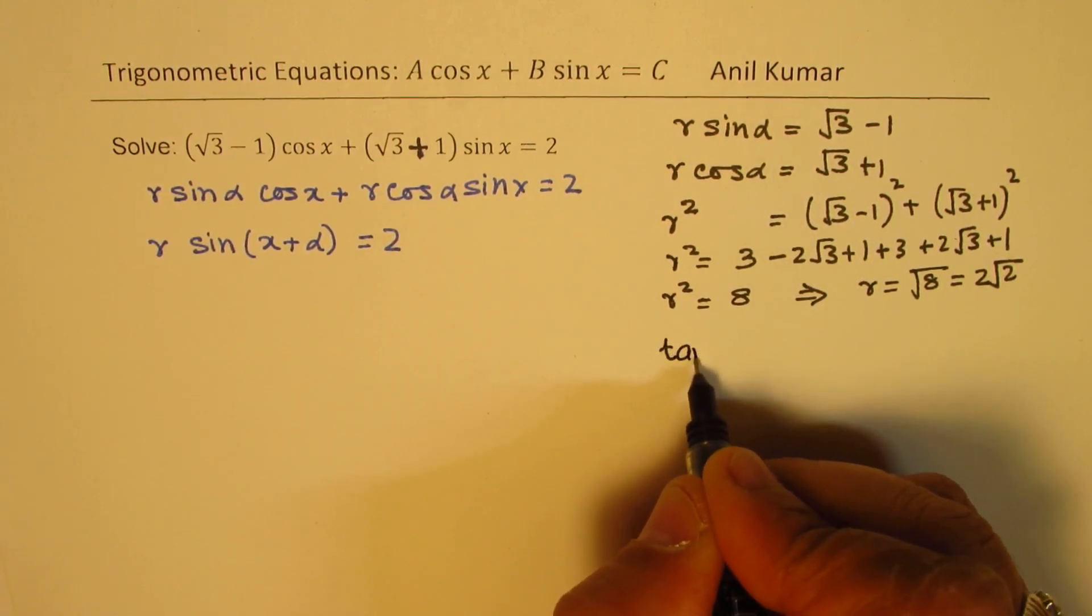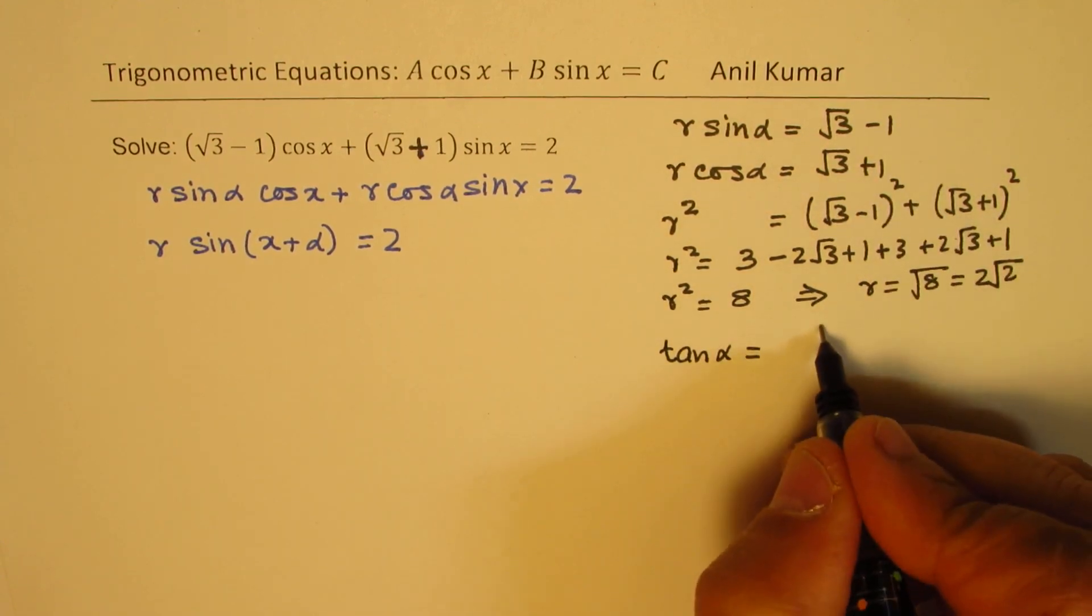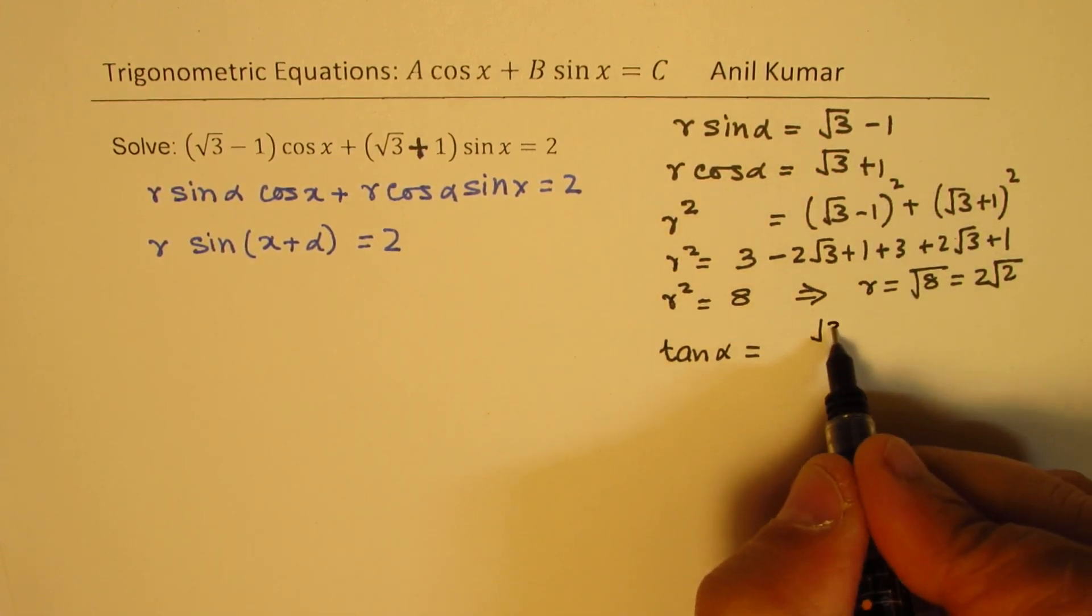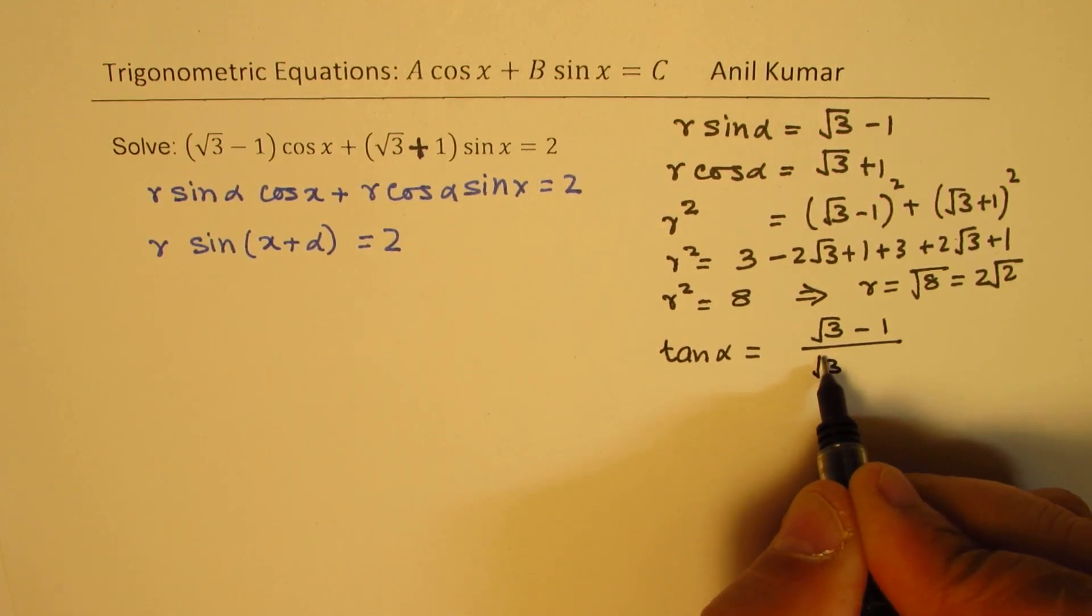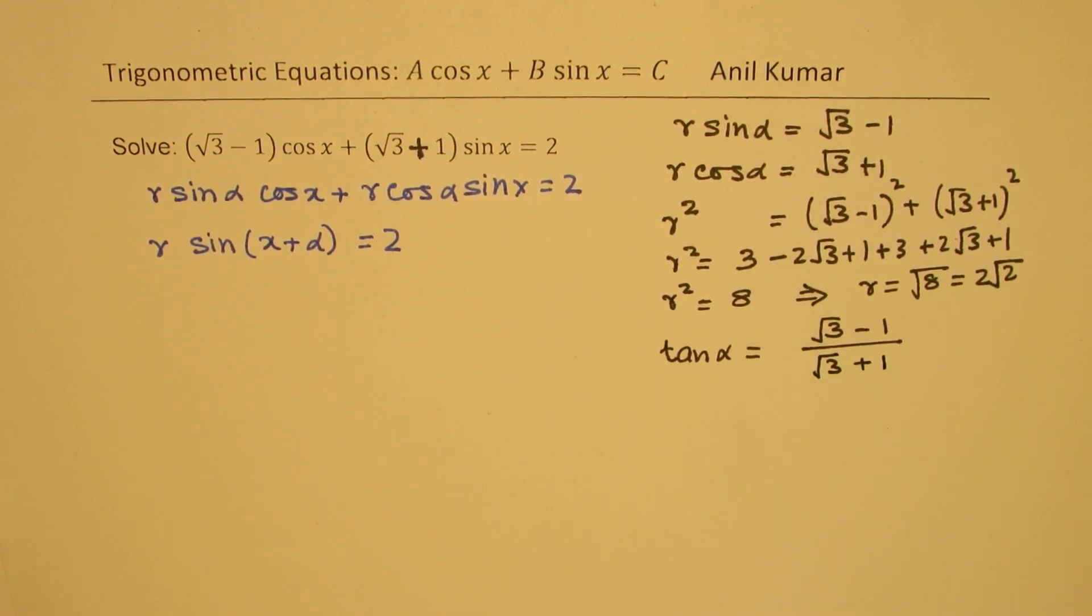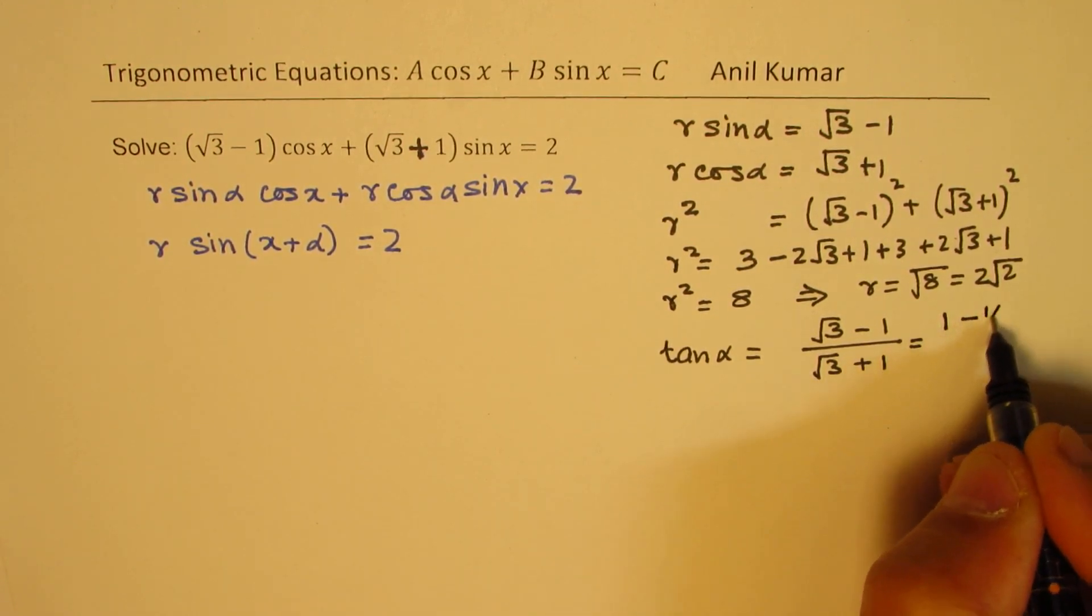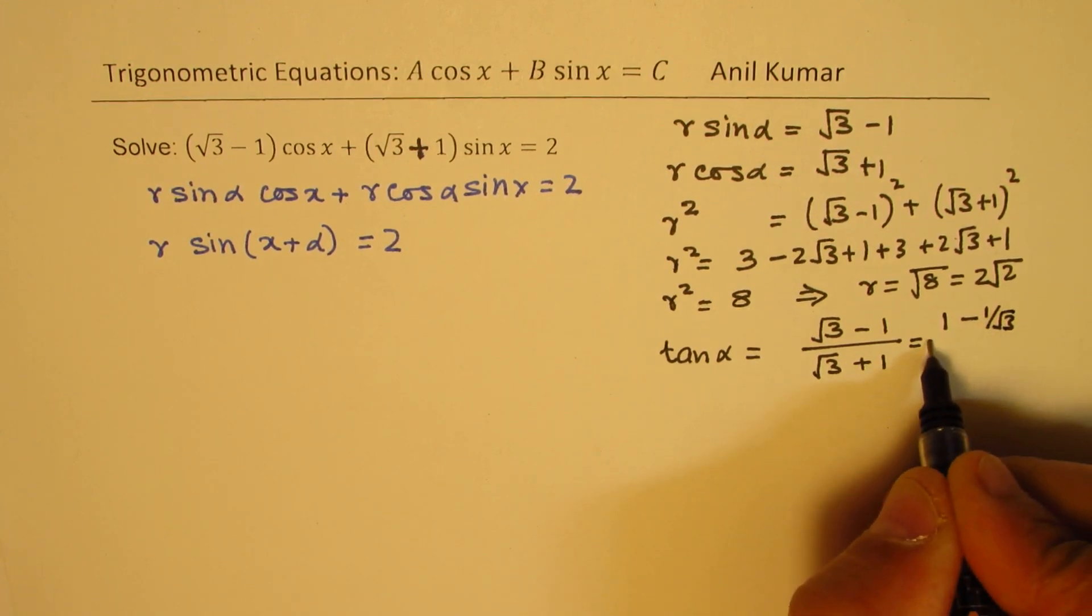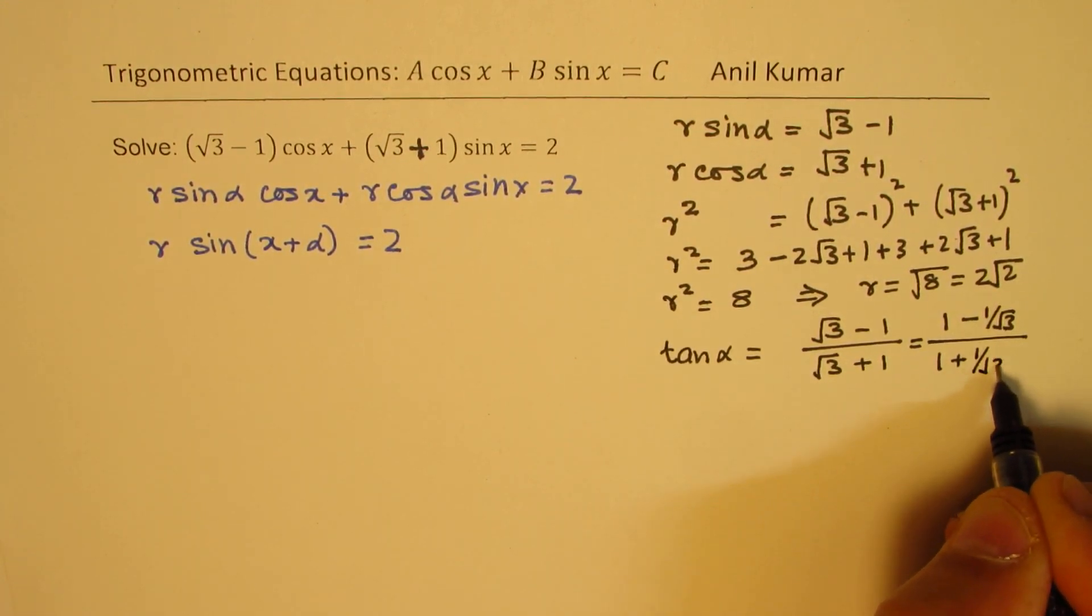So we get tan alpha as equal to square root of 3 minus 1 over square root of 3 plus 1. Now what we could do is divide by square root of 3 to rewrite this as equal to 1 minus 1 over square root of 3 over 1 plus 1 over square root of 3.